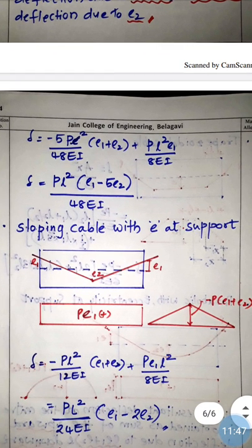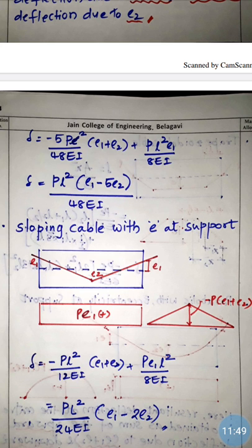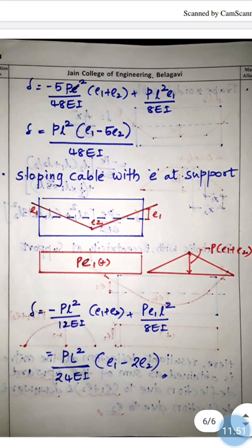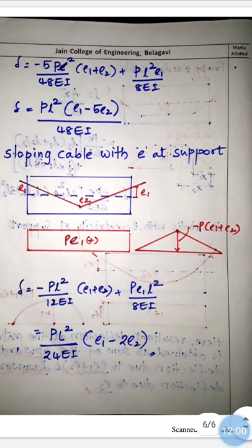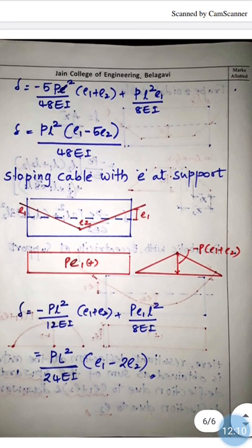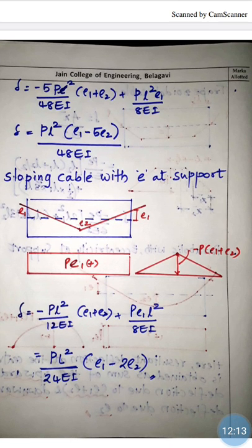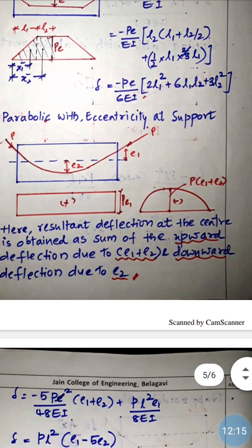For a sloping cable with eccentricity at support, the BMD is rectangular plus triangular: +P×E1 (positive) and −P×(E1+E2) (negative). The resultant — summation of downward and upward deflections — gives the final equation: δ = PL²(E1 − 2E2) / 24EI. These are the basic equations required for calculating deflection due to purely prestressing force.